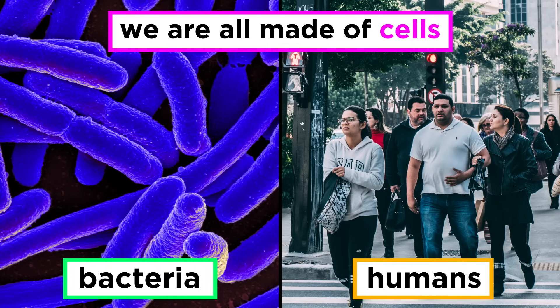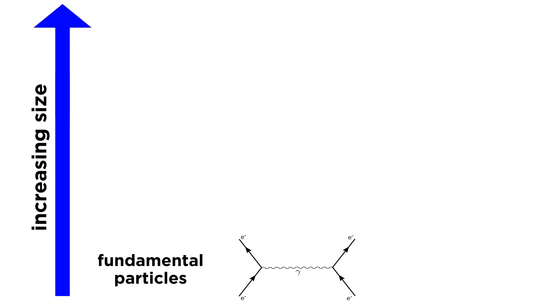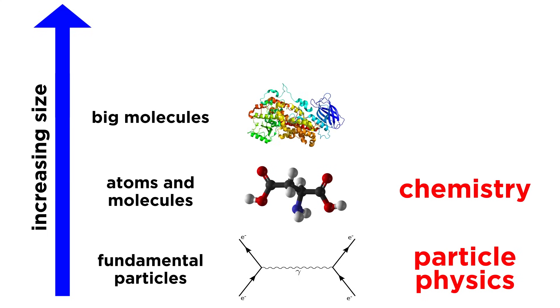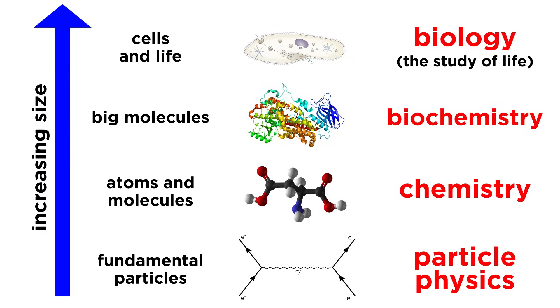If you want to know more about quarks and other particles, you'll want to study some physics. For atoms and molecules, you'll need chemistry, and once those molecules get very big, you'll need biochemistry. But once we get to an entire cell, we must be studying biology, because cells make up life, and biology is the study of life.